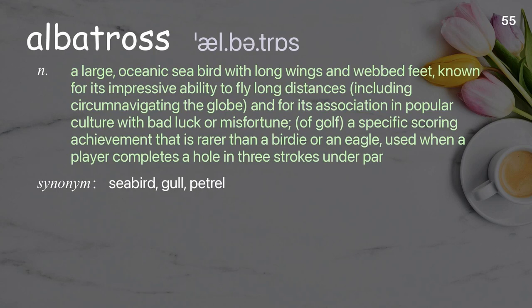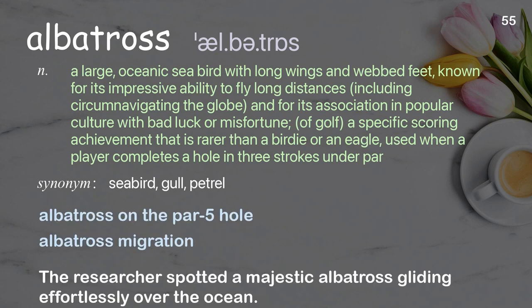Albatross: a large oceanic seabird with long wings and webbed feet, known for its impressive ability to fly long distances including circumnavigating the globe, and for its association in popular culture with bad luck or misfortune. In golf, a specific scoring achievement rarer than a birdie or eagle — completing a hole in three strokes under par. Examples: albatross on the par 5 hole, albatross migration. The researcher spotted a majestic albatross gliding effortlessly over the ocean.